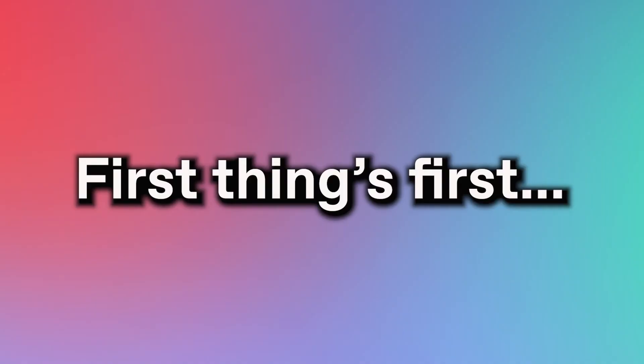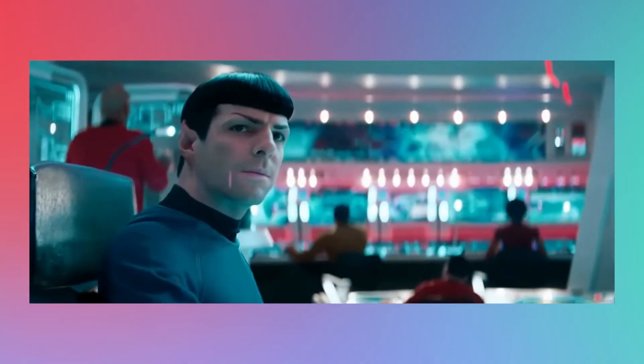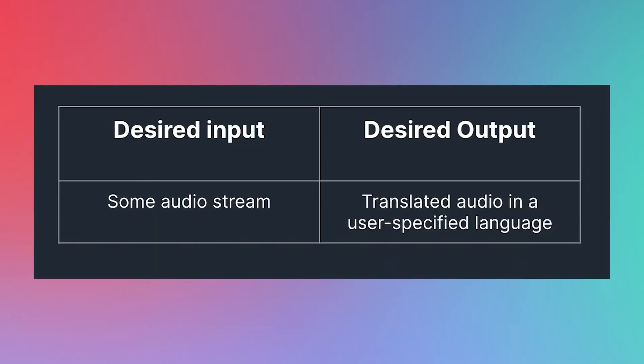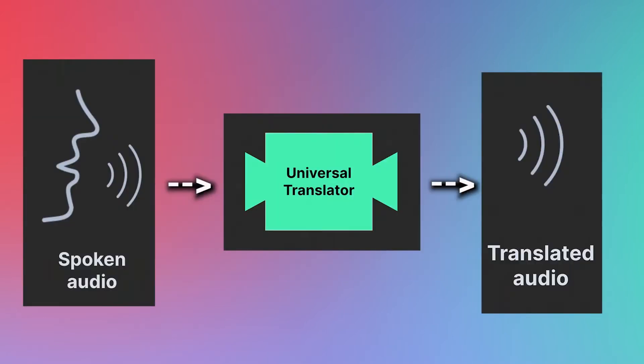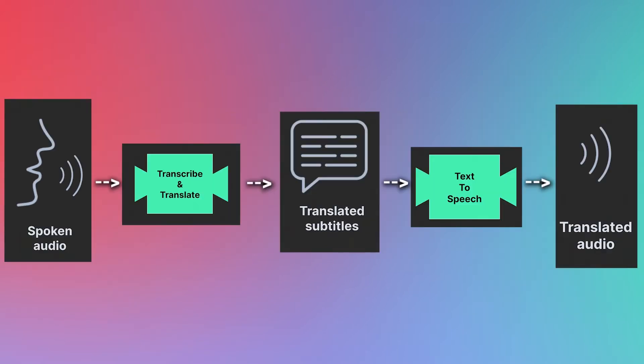Long story short, we're gonna have to deal with some amount of latency, some amount of delay. However, our goal is to make that delay as small as possible. And here's the pipeline that'll allow us to do that. First things first, we need to outline our desired input and output. Well, for a Star Trek universal translator, that's pretty simple. Our input is some audio and our output is translated audio. However, let's start small. Before going full sci-fi, we'll see if we can generate translated subtitles, like in the beginning of this video.